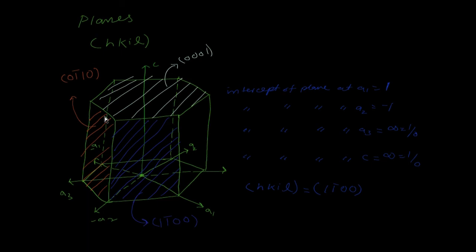For the basal plane, it is parallel to the a1, a2, and a3 directions, so h = 0, k = 0, i = 0. The only intercept is with c at one position, giving l = 1. So the indices for the basal plane are 0 0 0 1. Thanks for watching this video; please subscribe to this channel for future videos.